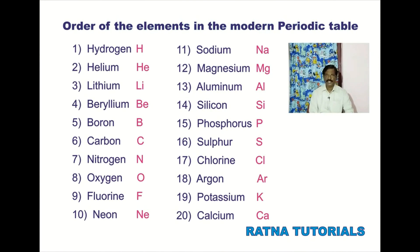First one is hydrogen, symbol H. Second one is helium, symbol HE. Third one, lithium, symbol LI. Beryllium, symbol BE. And then boron, symbol B.